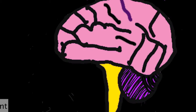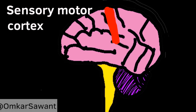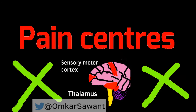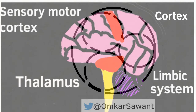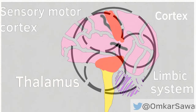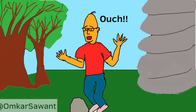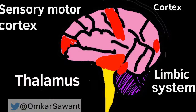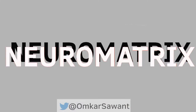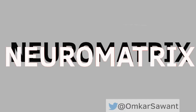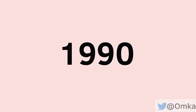It was noted that neither the cortex nor the thalamus was the center of pain. Rather, it was the complex interplay and interaction of these areas along with the limbic system and diffuse brain areas which gave rise to the sensation called pain. This gave rise to the concept of neuromatrix, defined by Ronald Melzack in 1990 and further elaborated in subsequent years.